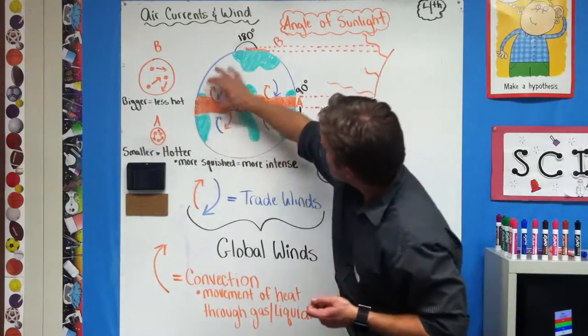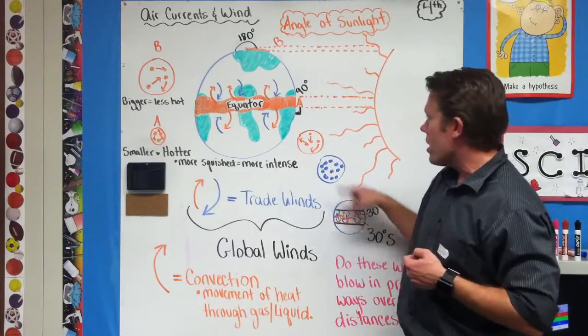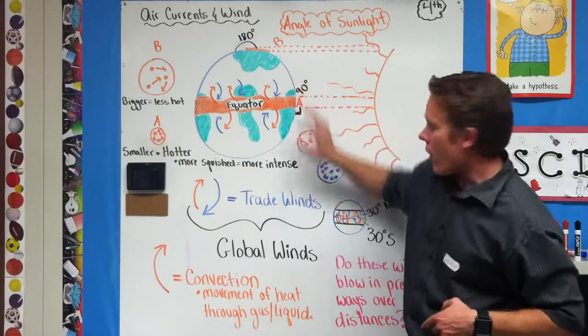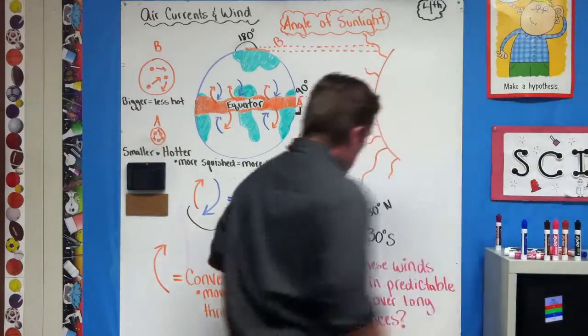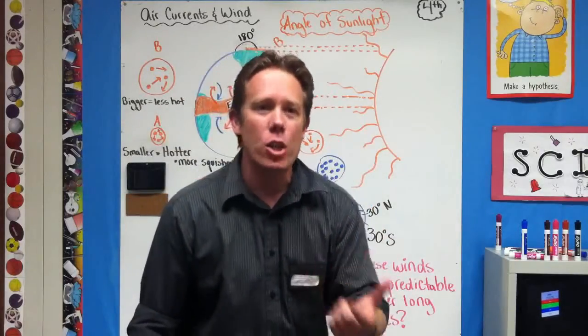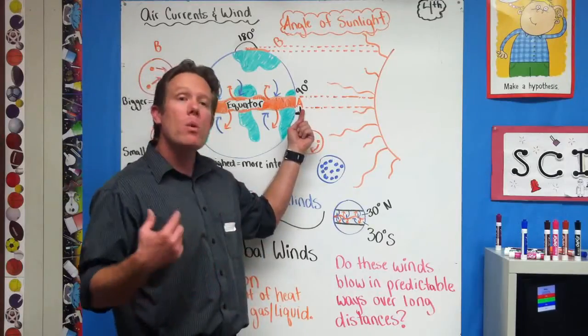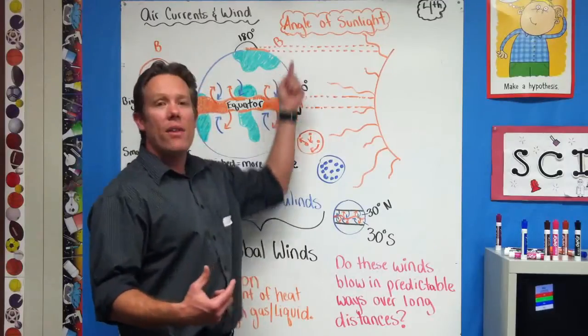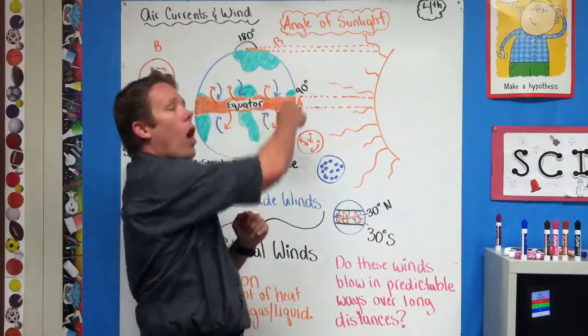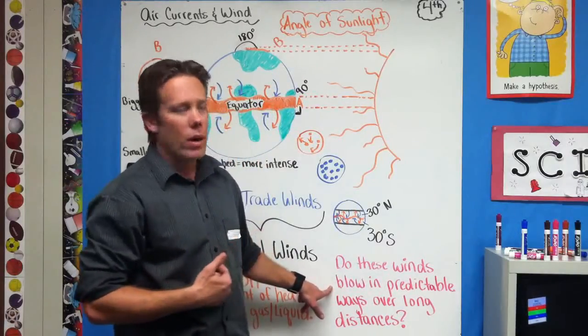What is this area called? You have this little strip here and this little strip here. This is basically a mini picture of this. These are called trade winds. In between the equator and 30 degrees north and the equator and 30 degrees south are called trade winds. Quick question: Do these winds blow in predictable ways over long distances? Yes, they do, because the sun is always going to be warming up the equator the most because of the intensity of A. The equator is going to be warmer always, so these winds are always going to be blowing in the same direction. Yes, they are predictable.